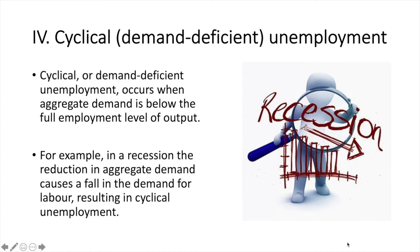Cyclical or demand-deficient unemployment occurs when aggregate demand is below the full employment level of output. For example, in a recession the reduction in aggregate demand causes a fall in the demand for labour resulting in cyclical unemployment. Cyclical unemployment is a key concern for government and can be addressed with monetary and fiscal policy.